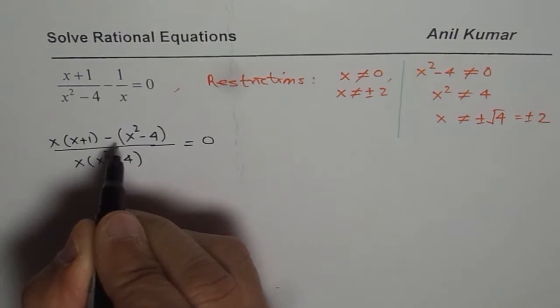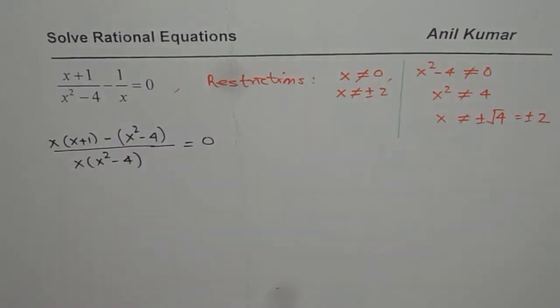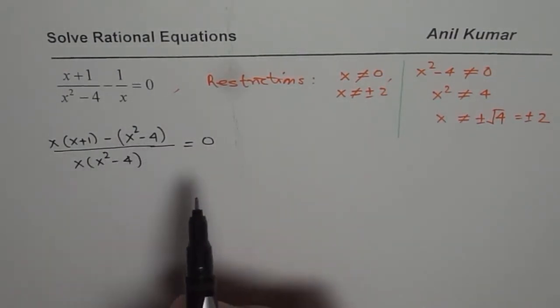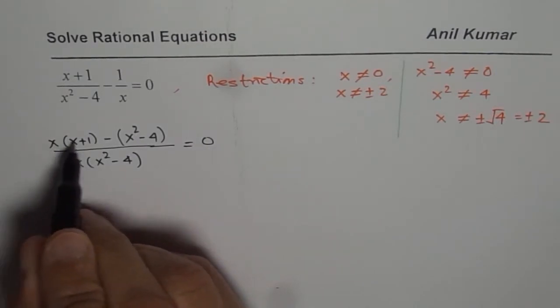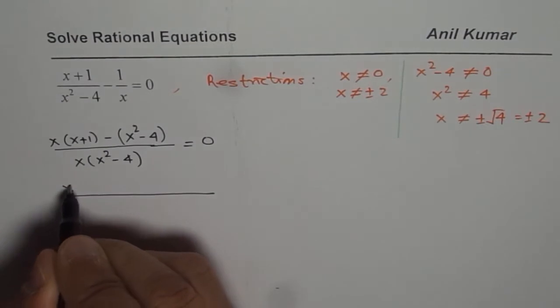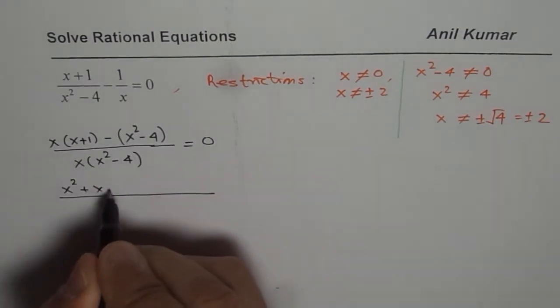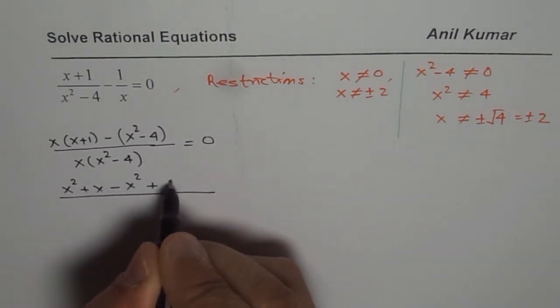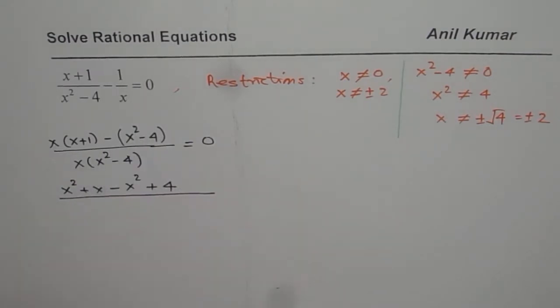Remember to put this minus and the term in brackets. If you don't, then you will make a mistake. So let us continue. So let us expand now the numerator. If we expand the numerator, we get x squared plus x minus x squared plus 4. So if you would not have put the bracket, you will get it wrong.